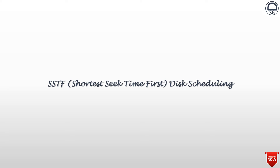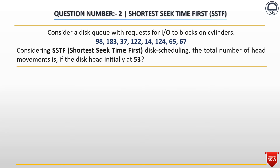Shortest Seek Time First disk scheduling. Now let's give you the second problem from Shortest Seek Time First disk scheduling. Consider a disk queue with requests for I/O to blocks on cylinders: 98, 183, 37, 122, 14, 124, 65, and 67. Considering SSTF, that is Shortest Seek Time First disk scheduling, the total number of head movements is, if the disk head is initially at 53.